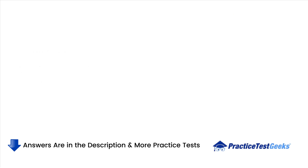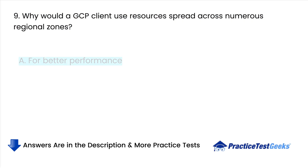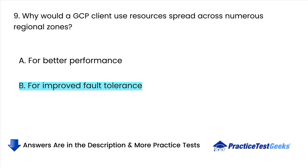Why would a GCP client use resources spread across numerous regional zones? A. For better performance. B. For improved fault tolerance.